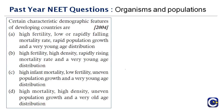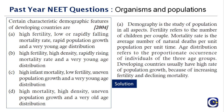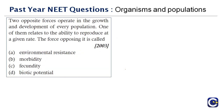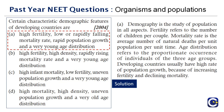Next question: certain demographic features of developing countries are — demography is the study of population in all aspects, including fertility. Fertility refers to the number of children per couple; mortality rate refers to the average number of natural deaths per unit population per unit time. The characteristic demographic features are high fertility, low or rapidly falling mortality rate, population growth, and young age distribution. The right answer is option A.